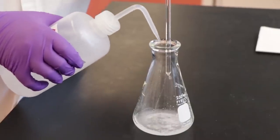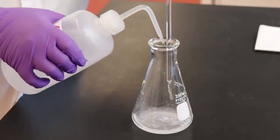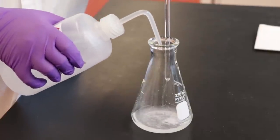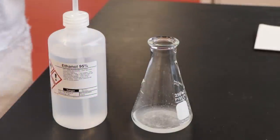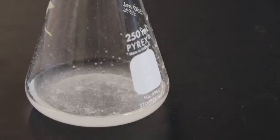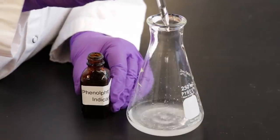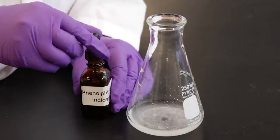Remember to rinse the glass rod with a small amount of 95% ethanol before removing it from the flask. Some of the binding material from the tablet will not dissolve, but there should be no large chunks remaining in the mixture. Then add two drops of phenolphthalein indicator to the flask.